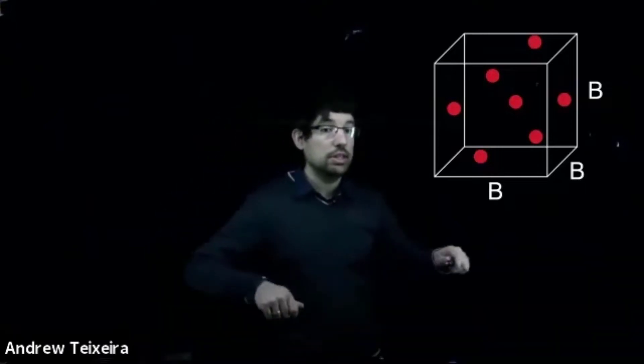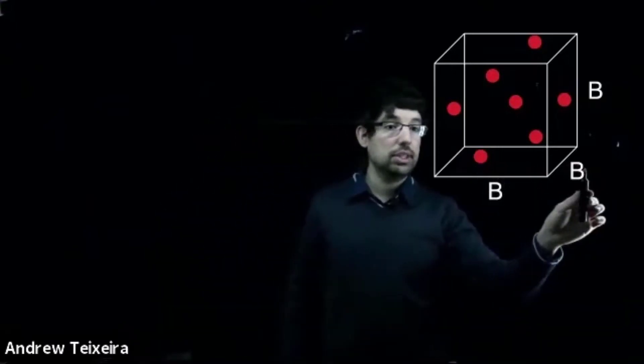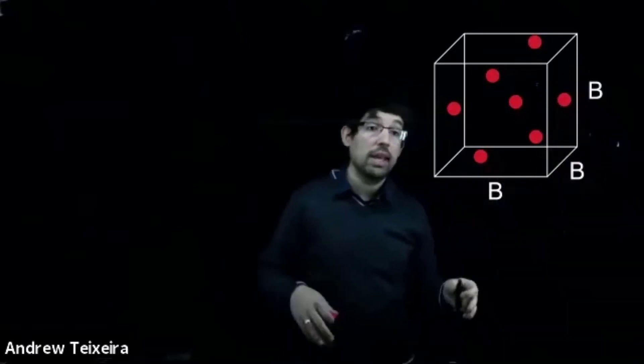So what I'm showing here is a box, and inside that box has dimensions of B. So every dimension here, the length, width, and height, are all of length B.